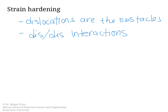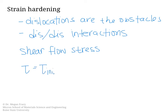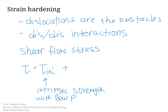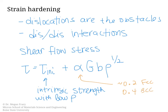We can look at the shear flow stress. The flow stress is the stress necessary to continue plastic deformation, and it equals some intrinsic strength of the material at low dislocation density, increased by the term αGb√ρ. Here, alpha is a coefficient — typically about 0.2 for FCC metals and 0.4 for BCC metals — G is the shear modulus, b is the magnitude of the Burgers vector, and ρ is the dislocation density.